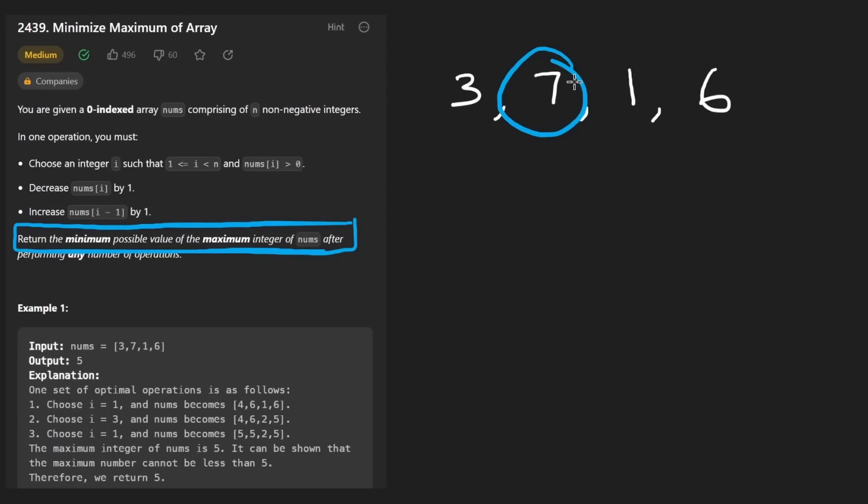But what we're trying to do is minimize that maximum value. So one way to do it would be to do exactly what we did, make this a six and make this a four. Now, the maximum is six. Well, it's in two spots, but it's still six. So that's what we would return.